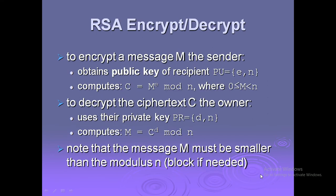RSA encryption and decryption: to encrypt a message M, the sender obtains the recipient's public key PU = {e, n} and computes C = M^e mod n, where 0 ≤ M < n.